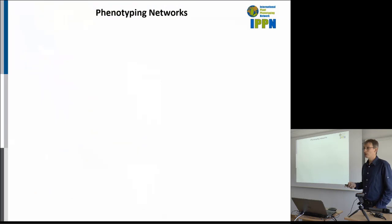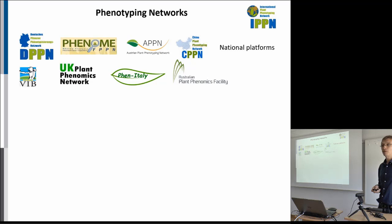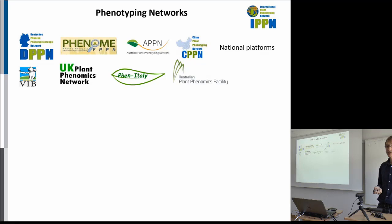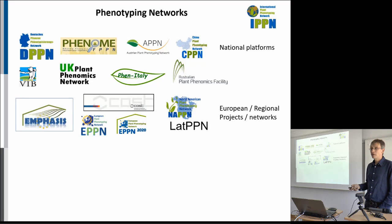Apart from institutions, there are also a lot of networks — national platforms. For example, in Germany, also headed here in Jülich, there is the German Plant Phenotyping Network, aiming to establish phenotyping infrastructure for German users. The same goes for the UK Plant Phenotyping Network, Phenom — the French network — and networks in Australia and Italy. More and more networks are popping up, with quite a lot of activity to bring national communities together.